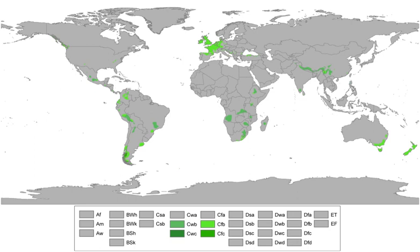Areas with subpolar oceanic climates feature an oceanic climate but are usually located closer to polar regions. As a result of their location, these regions tend to be on the cool end of oceanic climates. Snowfall tends to be more common here than in other oceanic climates. Subpolar oceanic climates are less prone to temperature extremes than subarctic climates or continental climates, featuring milder winters than these climates.